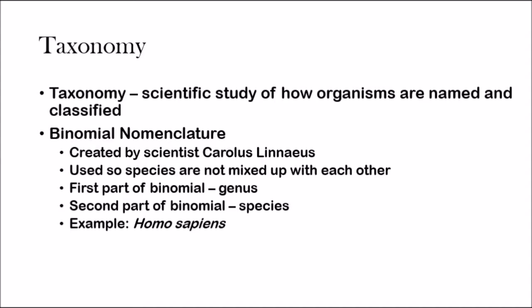When we talk about binomial nomenclature, there are two parts within the name. The first part is the genus, and the second part is the species. For example, the binomial nomenclature for human beings is Homo sapiens — Homo is the genus, and sapiens is the species. It's always italicized, and the first letter of the genus is capitalized while the first letter of the species is not. That applies to any binomial name.